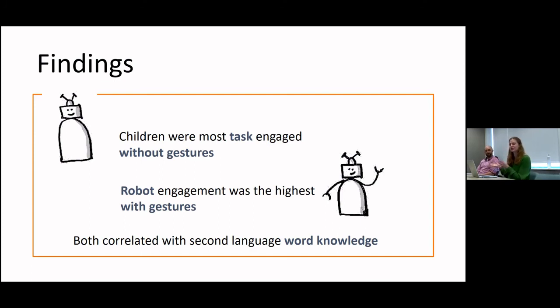They were more focused on the task on the tablet when the robot wasn't making gestures, but they were more engaged with the robots when the robot was using gestures. Which kind of makes sense, because if a robot is just standing next to you and talking without using gestures, it makes sense that you're focusing on the task more. But what was interesting, we did see that both of these engagements correlated with second language word knowledge.